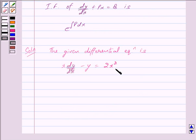Now, dividing both sides by x we get dy/dx - (1/x)y = 2x.